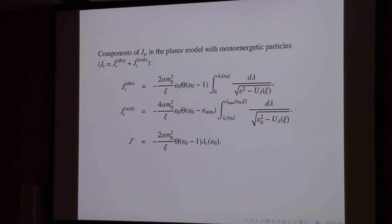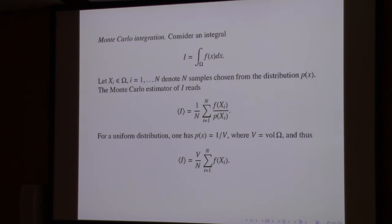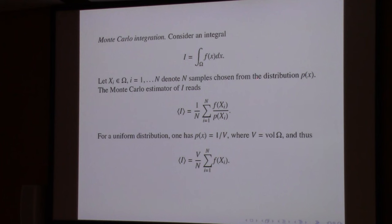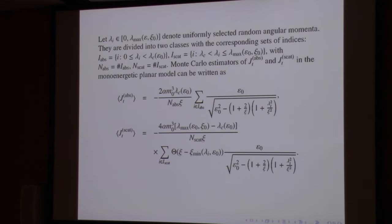So what would you do if you would like to have a Monte Carlo version of that? The first option is Monte Carlo integration — very simple. If you have the integrals, you attempt them by Monte Carlo. The only thing you need to do is learn how to select parameters at random — angular momentum in this case. These are the simplest formulas for Monte Carlo integration, and when I do that I end up with the following Monte Carlo example.